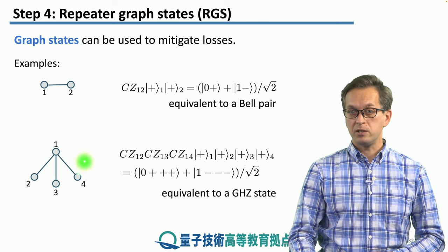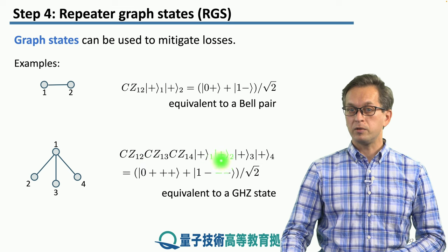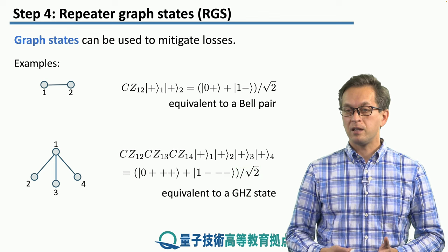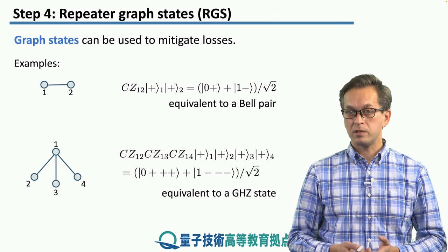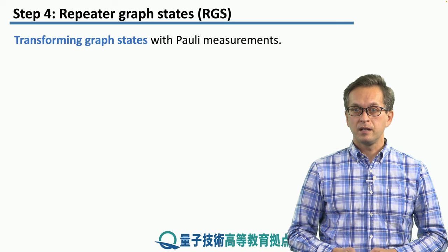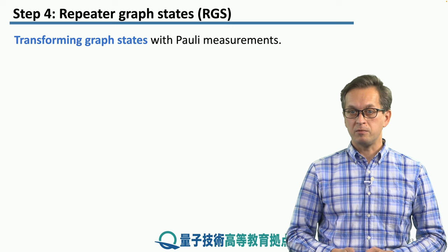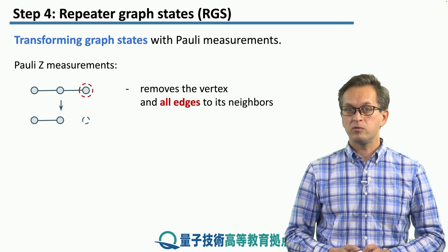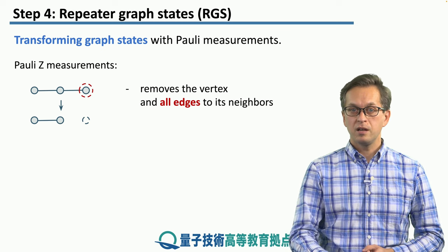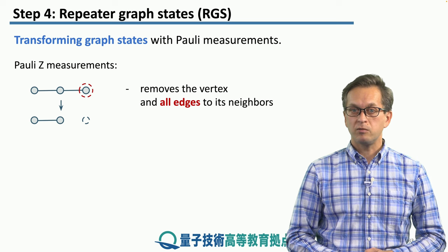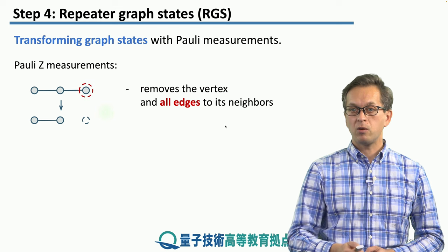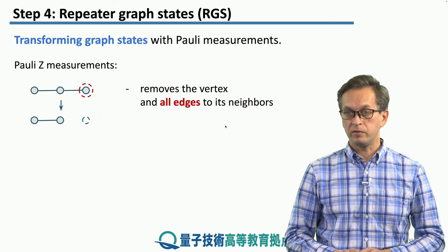We have three edges, therefore we apply three CZ gates onto these four qubits, and we get the following state. If you apply Hadamard on qubits 2, 3, and 4, we see that this turns it into a GHZ state. So how do we transform these graph states using Pauli measurements? There are two very simple rules, and we'll use the nice visualization of graph states. If we apply a Pauli Z measurement, we're just removing the vertex from the graph and also removing all the edges to all of its neighbors.